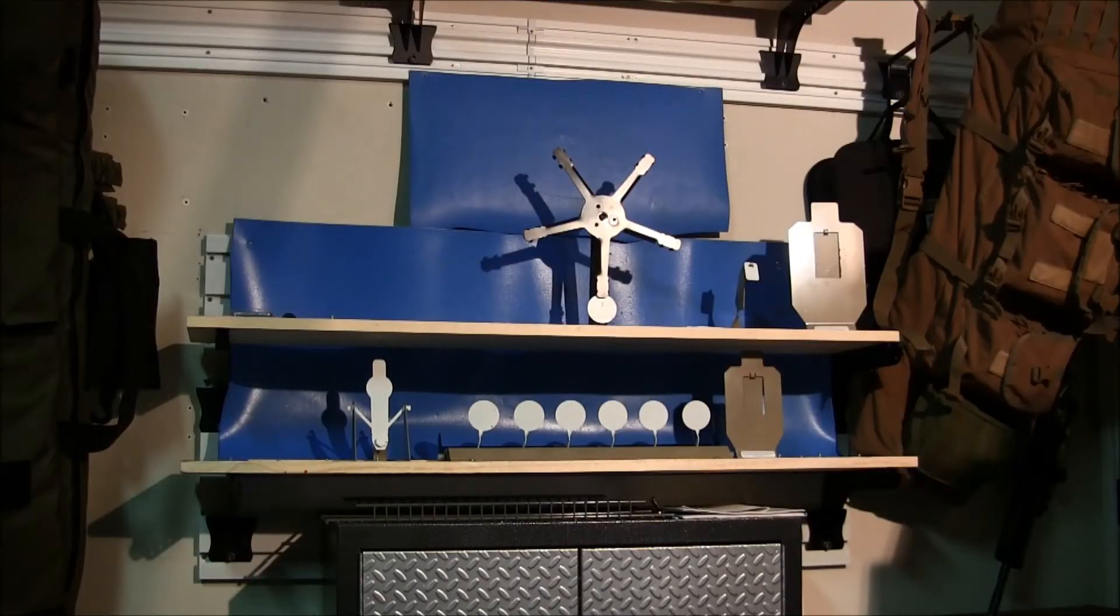A real Texas Star target costs upwards of $700 while a real plate rack runs you over a thousand dollars. Not all local ranges have them or allow you to regularly use them for practice either. So take a look at how nicely these are made so you can practice at a fraction of the cost.